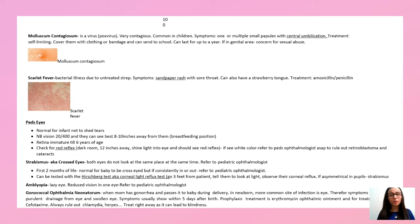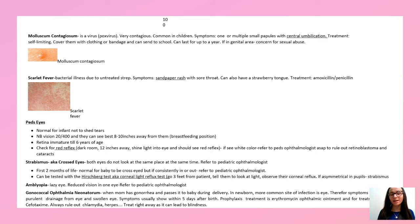Molluscum contagiosum: key feature is central umbilication — multiple small papules with central umbilication. If in the genital area, be concerned for sexual abuse. It can last about a year. Scarlet fever: sandpaper rash with sore throat is the key differentiator; can also have a strawberry tongue. Treat with antibiotics.